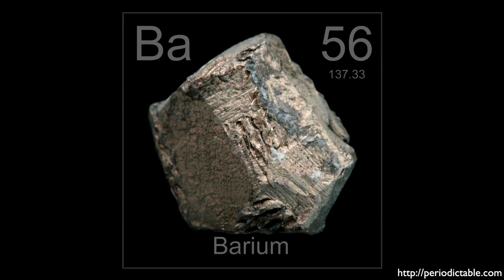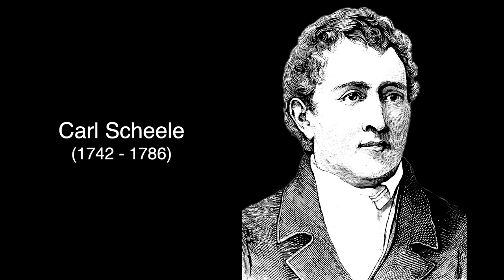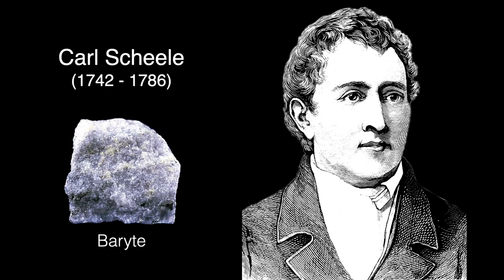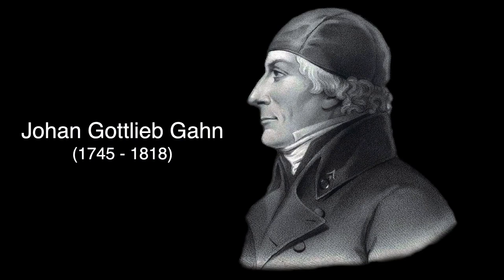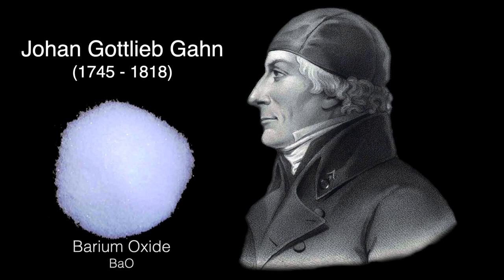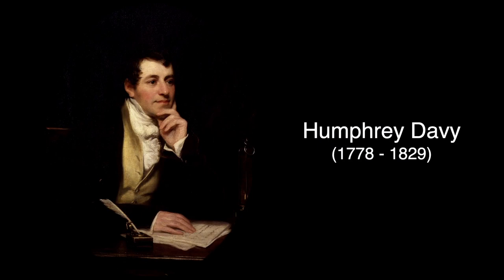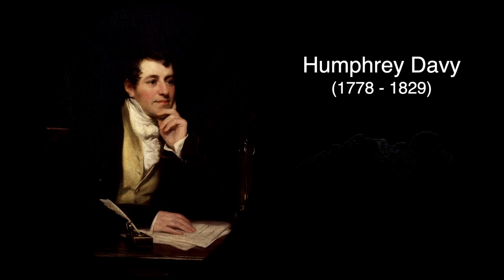In 1774, Carl Scheele suspected that the mineral barite contained a new element; he was only able to isolate barium oxide. Johann Gottlieb Gahn was a Swedish chemist and metallurgist who discovered manganese — two years after Scheele isolated barium oxide, Gahn also isolated the same compound. Close, but no cigar. Over 30 years later, in 1808, Sir Humphrey Davy was able to isolate metallic barium by the electrolysis of barium salts.